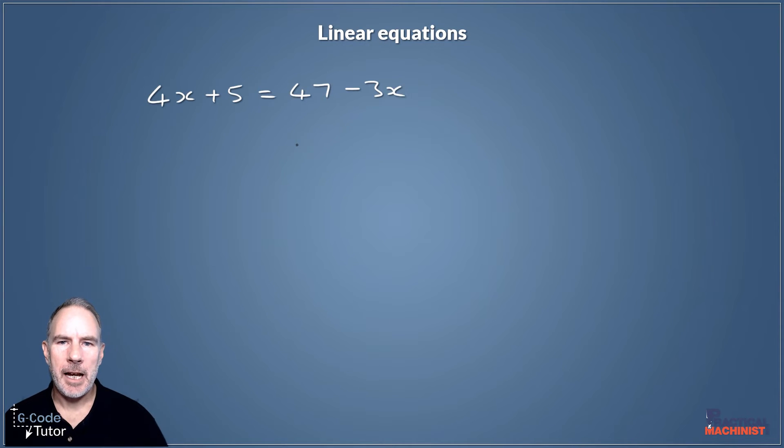If we've got minus 3x on the right hand side, first thing I want to do is remove that minus 3x, so we're just left with 47, that's going to make it a lot easier to work out. Same as before, we add 3x to this side and that deals with the minus 3x. But of course what we do to one side of the equation, we have to do to the other. So if we're adding 3 times x to the right hand side, we have to add 3 times x to the left hand side also.